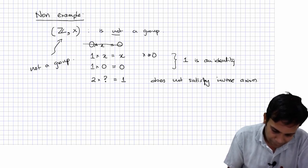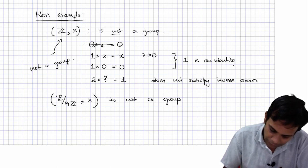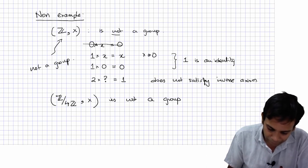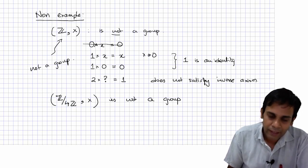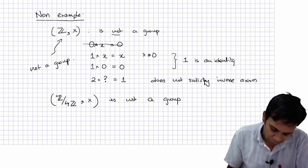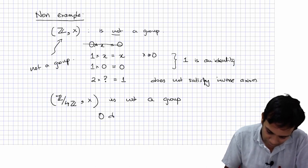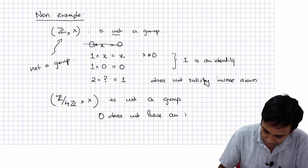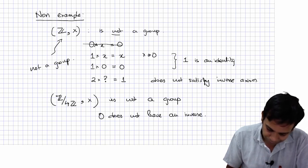Similarly, Z mod 4Z under multiplication is not a group. For example, 3 times 3 is 9, and 9 divided by 4 leaves remainder 1, so 3 times 3 equals 1 in Z mod 4. However, 0 does not have an inverse: no matter what you multiply 0 by, you will not get 1. So this is also not a group.